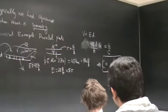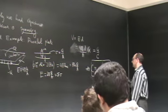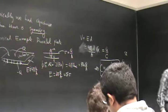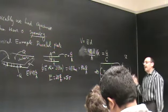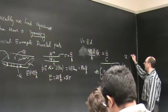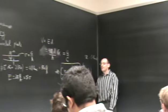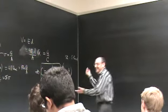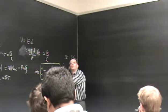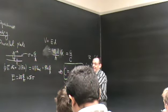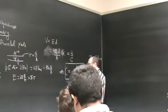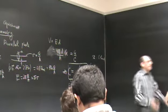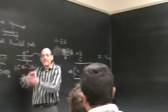In SI units, ε₀ is often given in farads per meter. But in CGS units, capacitance has units of geometry — centimeters — saying something about the ratio between the area of the capacitor and the distance between the plates.